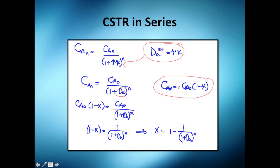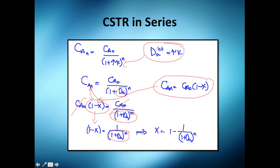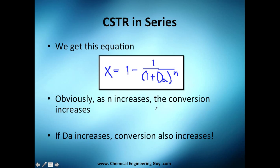We plug in conversion. Concentrations cancel at the beginning; the difference in conversion stays, and we solve for conversion. The result is: X = 1 − 1/(1 + Da)^N, where Da is the Damköhler number and N is the number of reactors. As N increases, conversion increases.